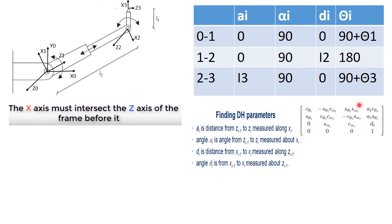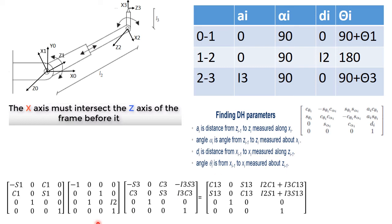This is the individual transformation matrix form, and if you substitute all these values you will get three individual transformation matrices. Multiplying all three together gives you the final transformation matrix for this robot.